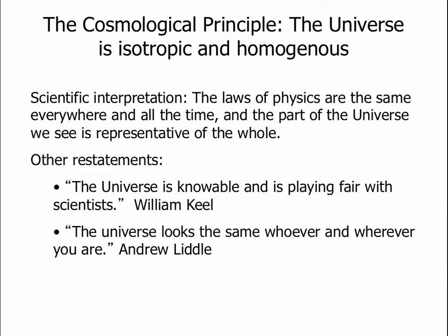Our understanding of cosmology has a philosophical underpinning called the cosmological principle. The cosmological principle states that the universe is isotropic and homogenous. In case you don't use those two words in everyday life, isotropic and homogenous basically mean that the laws of physics are the same everywhere and for all time, and that the part of the universe that we see is representative of the universe as a whole.